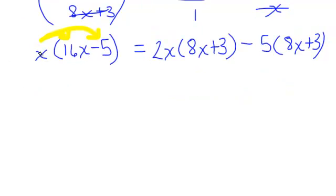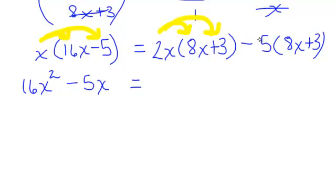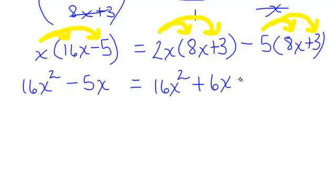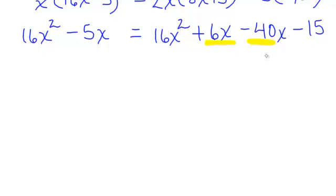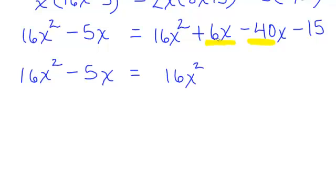Let's do some distributive property. On the left side: x times 16x and x times negative 5 gives 16x² minus 5x. On the right side: 2x times 8x is 16x², and 2x times 3 is 6x. Also, negative 5 times 8x is negative 40x, and negative 5 times 3 is negative 15. Combining like terms on the right: 16x² plus 6x minus 40x is 16x² minus 34x.